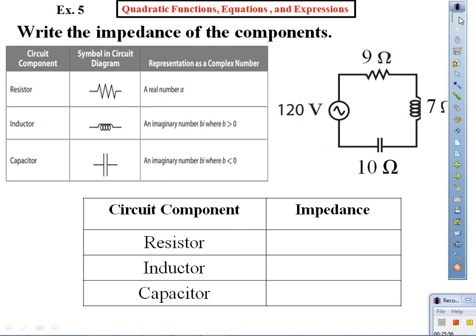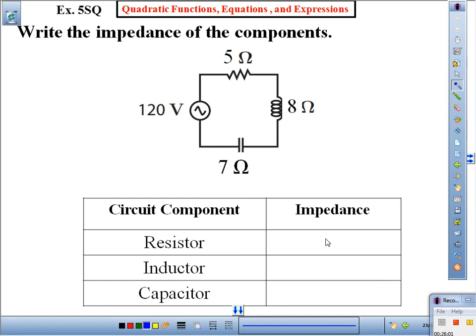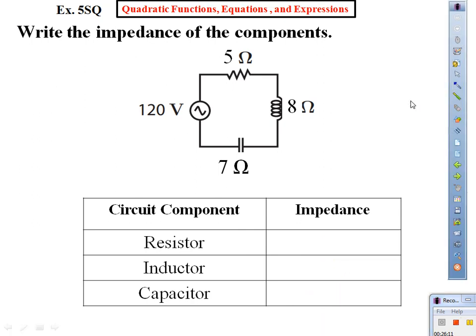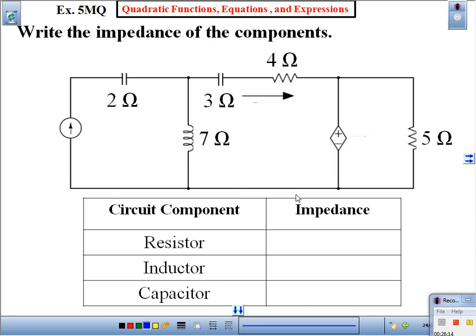Now that we know how to translate that into numbers, let's do the last one. What is the resistor? Five. Inductor? 8i. Capacitor? Negative 7i. Then we get to this part — resistor: nine. Inductor: 7i. Capacitor: negative 5i. That is correct.